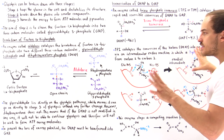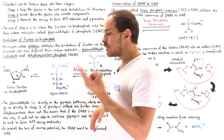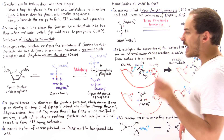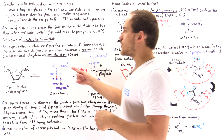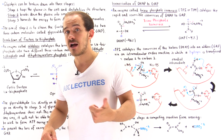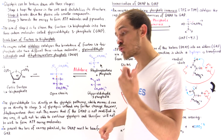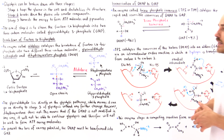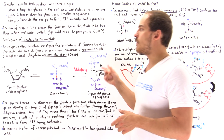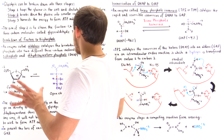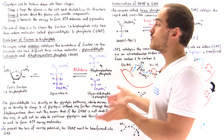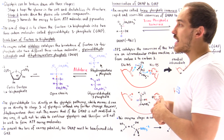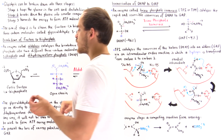In this stage there are actually two different processes, so we use two different enzymes. One enzyme is known as aldolase and the other is known as triose phosphate isomerase. Let's begin by focusing on aldolase and the reaction that it catalyzes.